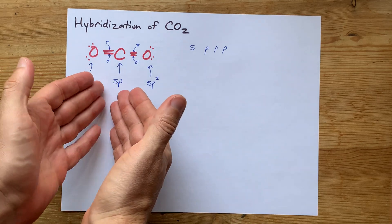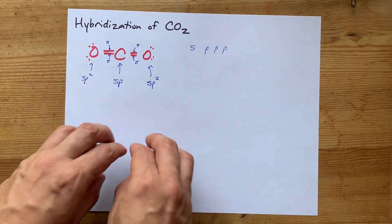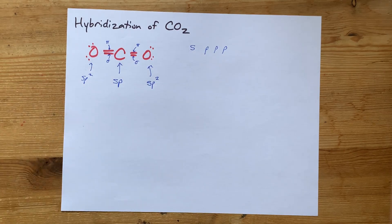The hybridization of carbon is SP, and of oxygen is SP2. That's the end of it. Thanks for being with me, and best of luck.